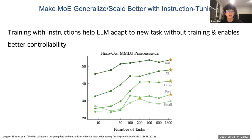When we scale the number of tasks, we consistently get better gains in held-out evaluations across different types. As shown here, when you add both the number of tasks and the model size, the model continues to give better performance. Keeping that in mind, we applied the same instruction tuning technique to the Mixture of Experts model in this work.